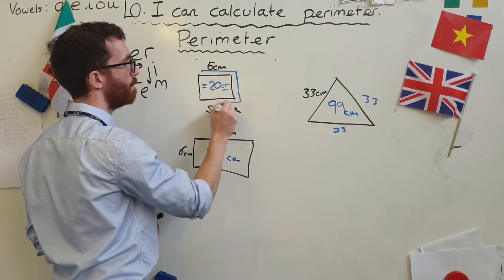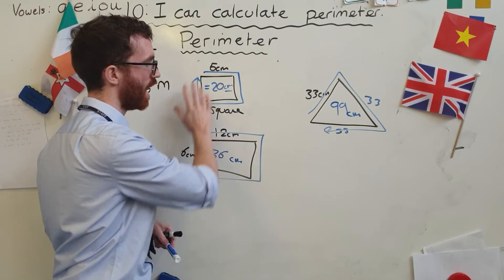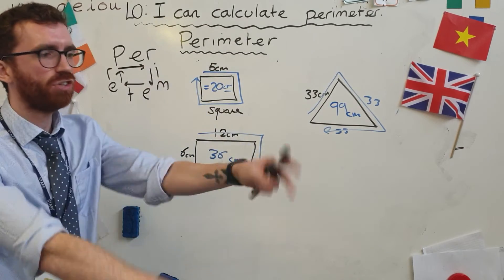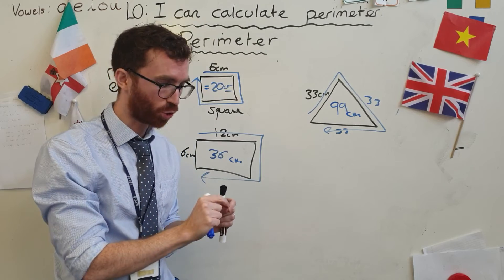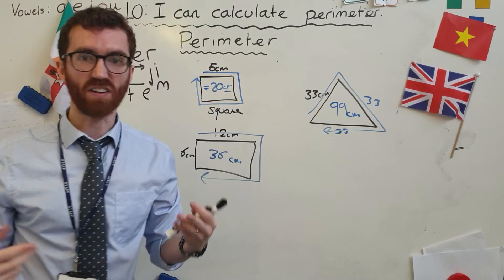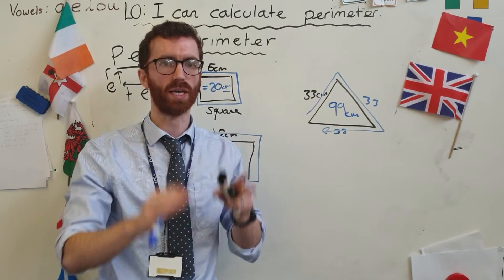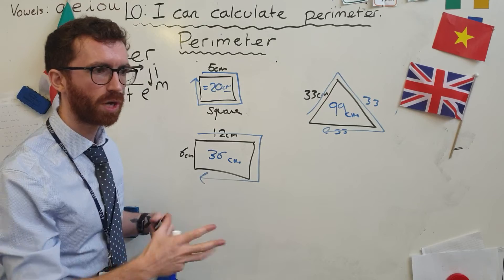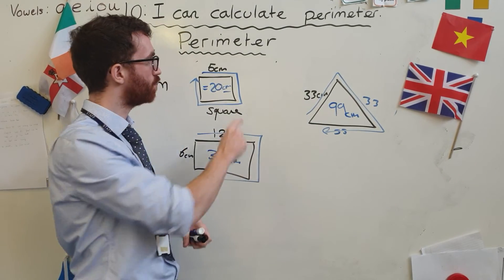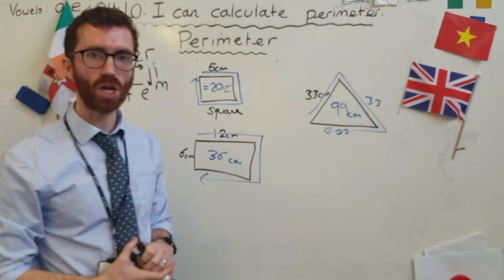Remember: perimeter — per-ri-me-ter — it's the distance around the outside of the shape. At some point we'll also be looking at area, which is the area inside the shape, but that's for another video. Your challenge at home: draw some different shapes, label each side, and show me what the perimeter is. If you don't have a ruler, use a flat surface — the side of a fork or the edge of a book. Create squares, rectangles, triangles, hexagons, pentagons. Pop the length on each side — it doesn't need to be accurate — but show me the calculations and email me your answers.